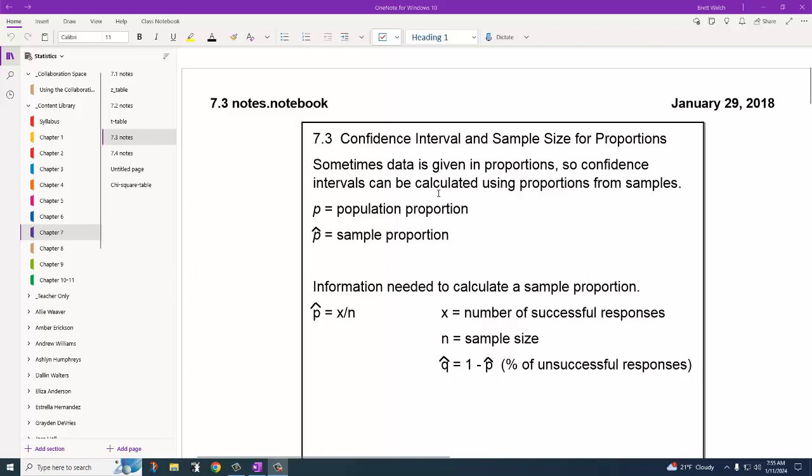These are the notes for 7.3. We've been doing confidence intervals around the population mean by using a sample average. We can create a bubble with 95, 99, or 90% confidence around that sample mean to say that the population mean is in this window. We want to do the same thing when data is not given as a mean but may be given as a proportion.